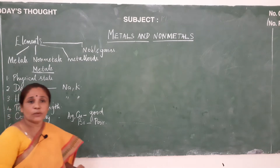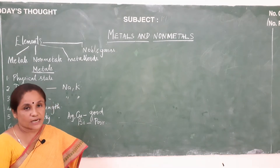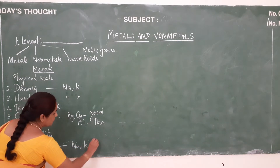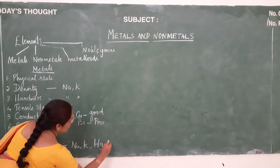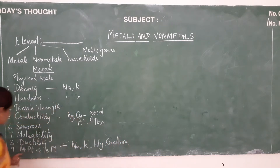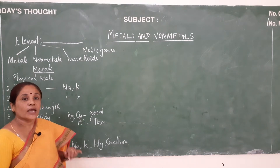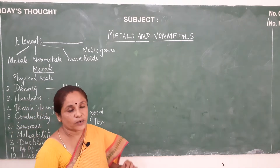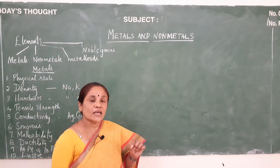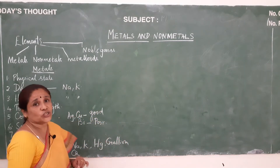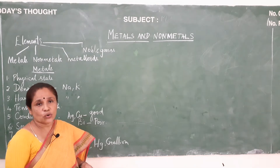The next property is melting point and boiling point. Metals have high melting point and very high boiling point. There is an exception for sodium, potassium, mercury, and gallium — these four elements have low melting point and boiling point. The last property is lustre. Metals possess very good shining properties, that is why we call them lustrous. Exception is calcium, which has low or nil lustre — it does not shine.